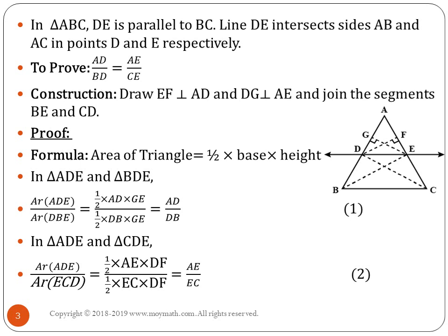For the other pair — triangles ADE and CDE — area of triangle ADE = (1/2) × base AE × height DF, and area of triangle CDE = (1/2) × base EC × height DF. Cancelling the half and DF from both sides gives us AE/EC.